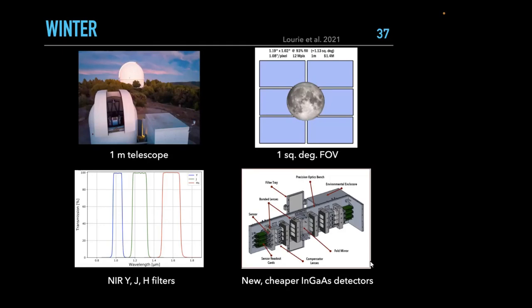The innovative technology in WINTER is the use of indium gallium arsenide (InGaAs) detectors for the first time in astronomy. These detectors are about an order of magnitude cheaper than traditional HgCdTe detectors. If WINTER succeeds, we could see many more such infrared surveys at greatly reduced cost.